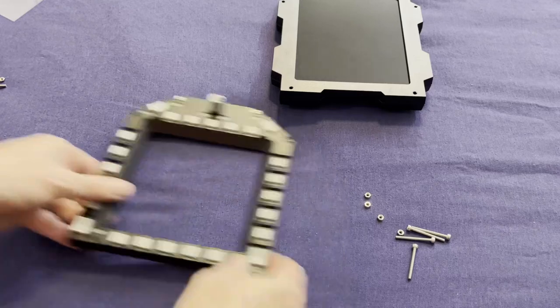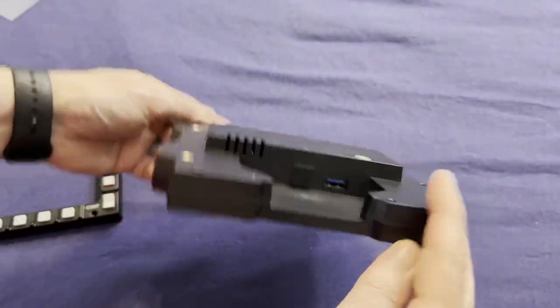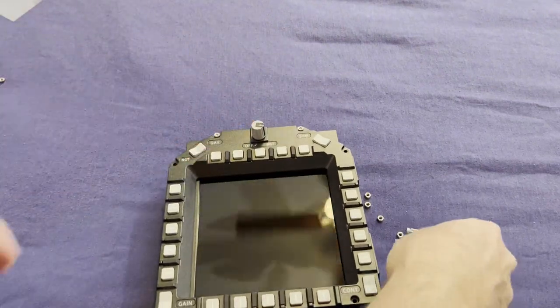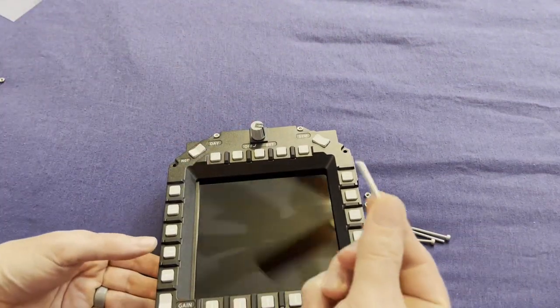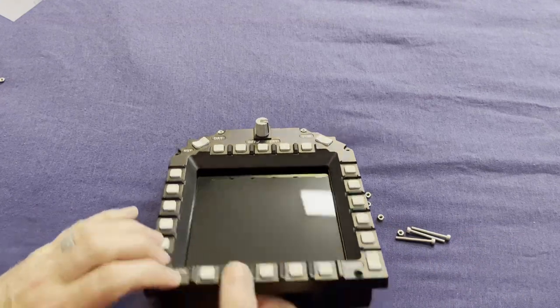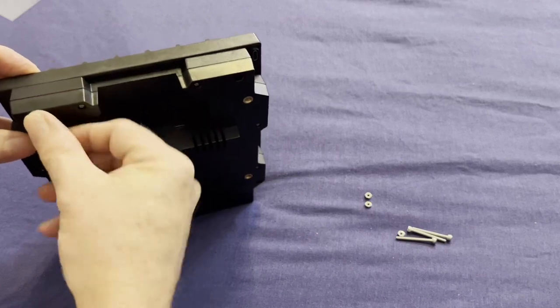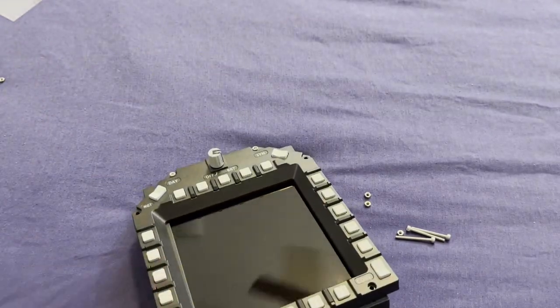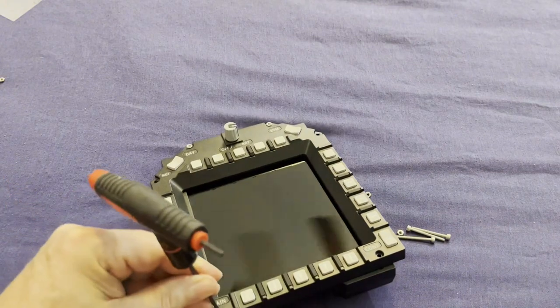And now we're going to make sure we have the screen oriented right. There's our connector, so that'll be the bottom. Set the DDI on top. And then we're going to use these longer screws here to reconnect the two back together. And I will need one of the nuts to hold that on there. So I'm going to just get this one started.